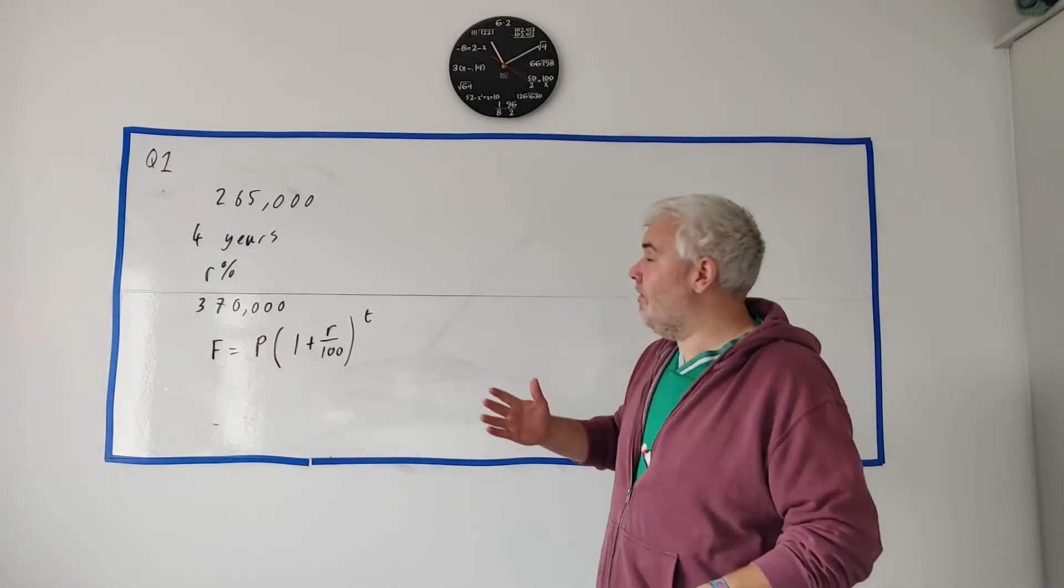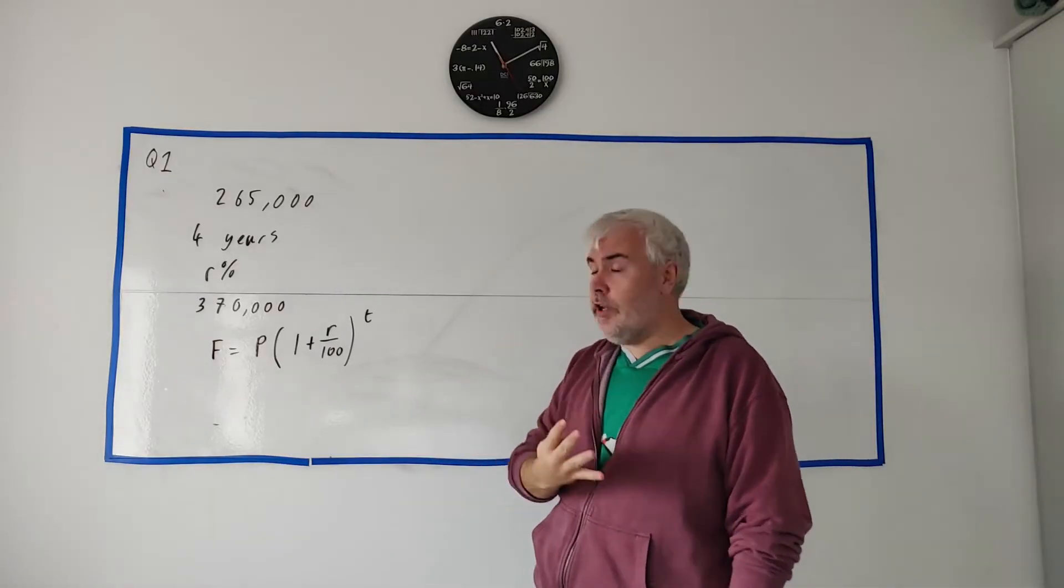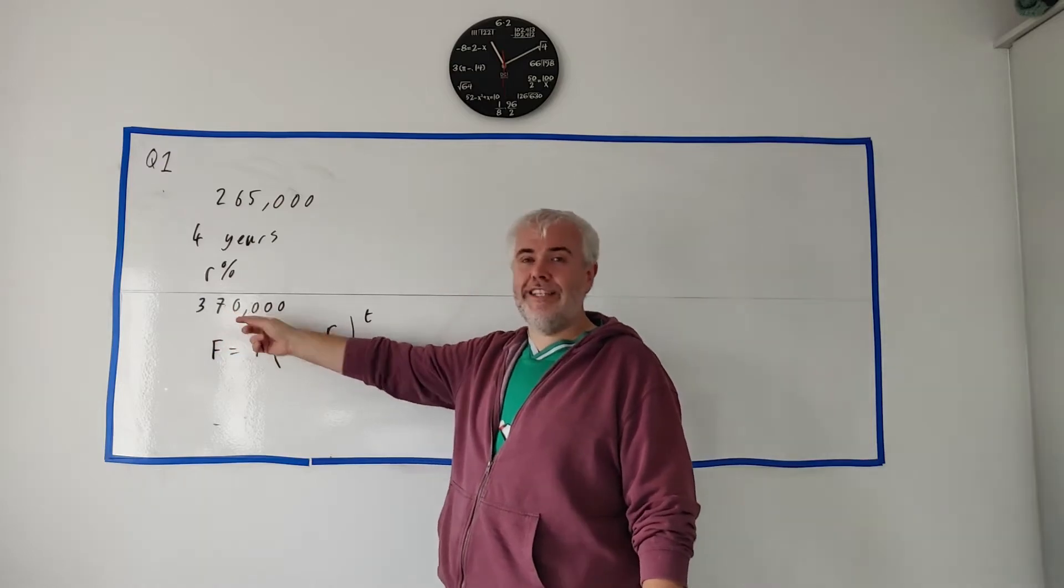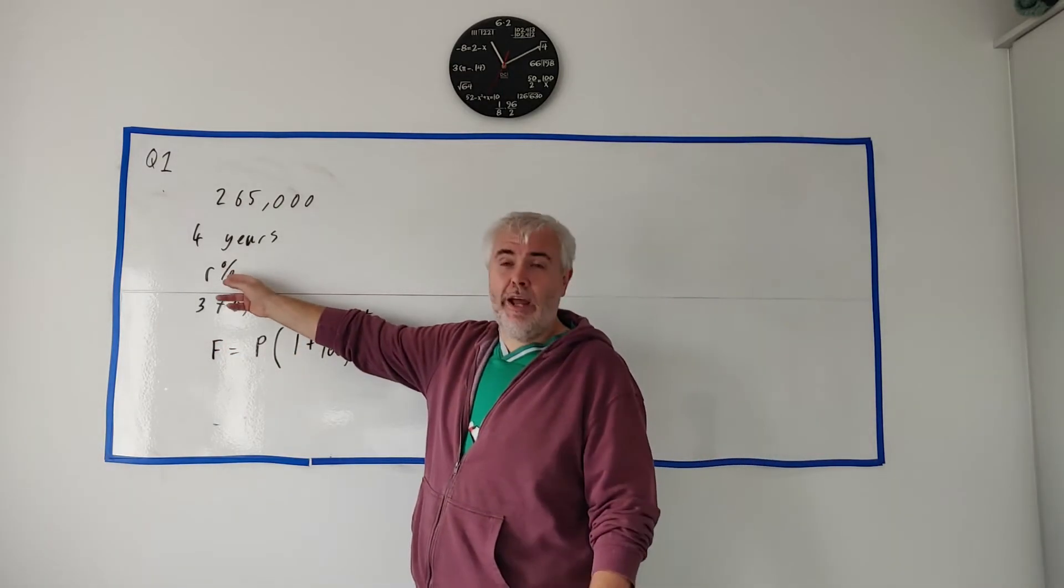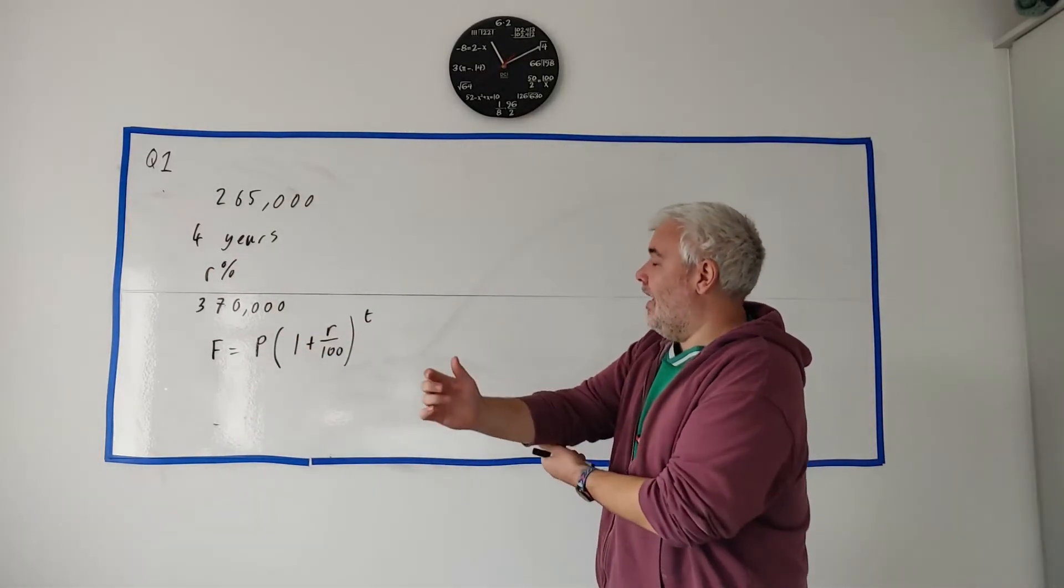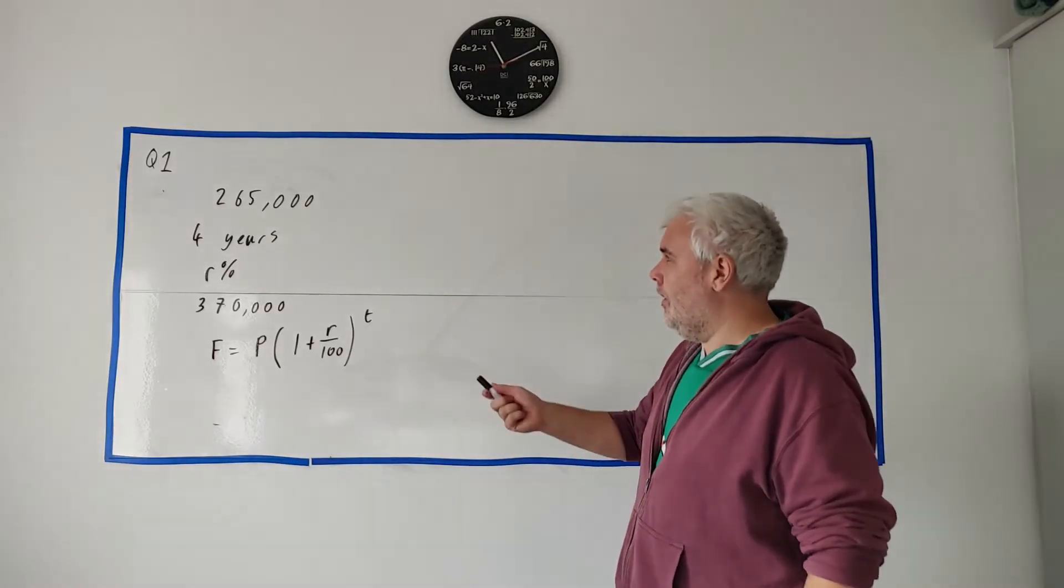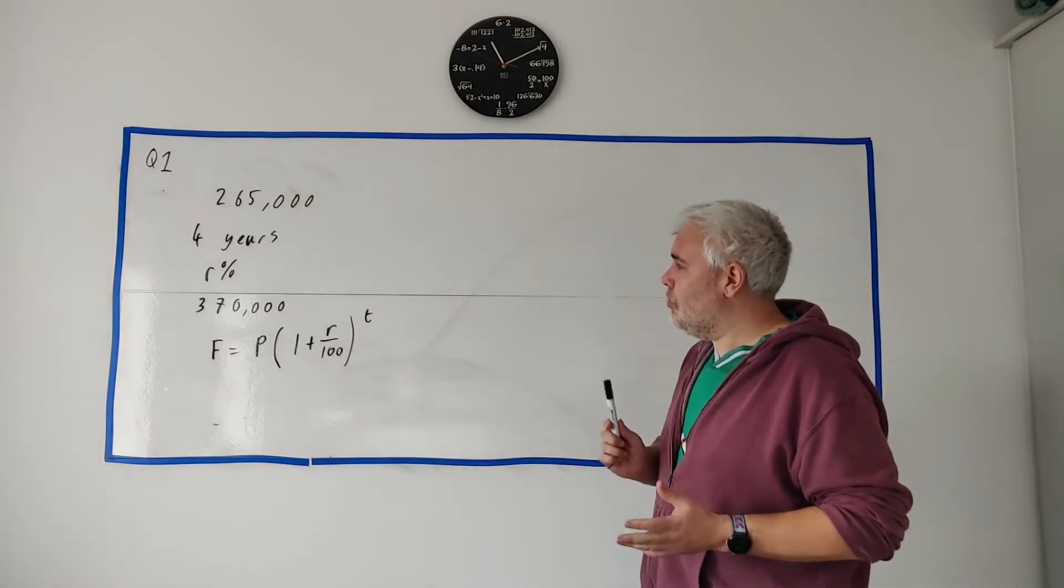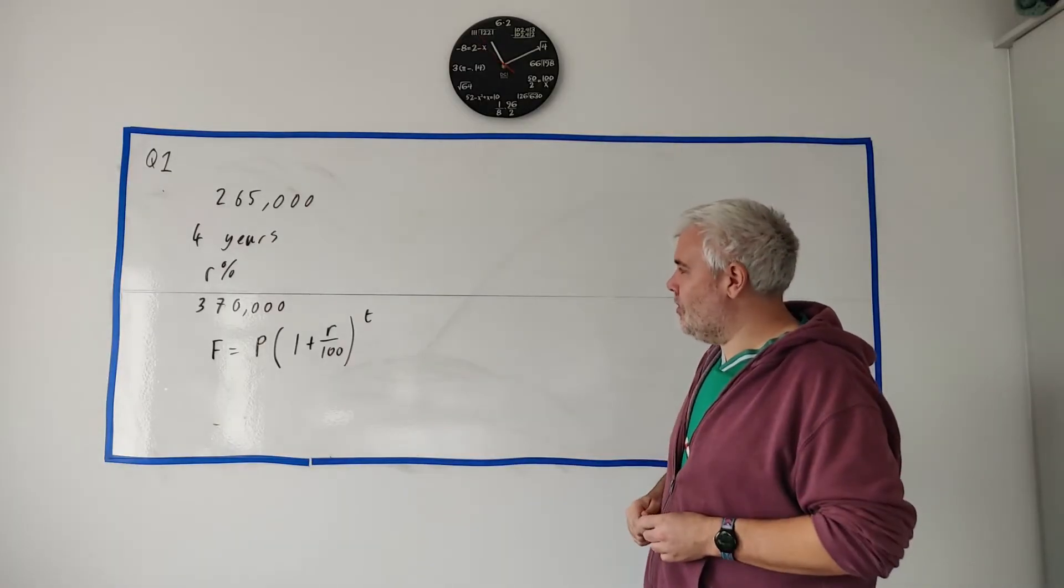In part C they have given us a house worth 265,000. And over four years it goes up the same percentage every year. After four years it's worth 370,000. And what percentage is it? How much percent has it gone up every year? And here's a formula to help you out. As an aside, in the exams the house always goes up in value. That's not technically true in life, so just be warned. Don't buy a house and assume it will definitely go up in value.